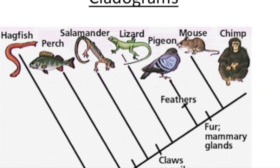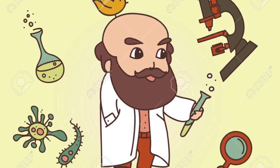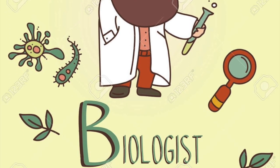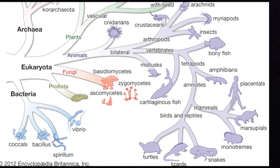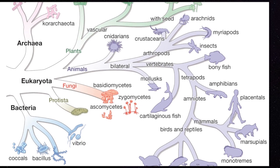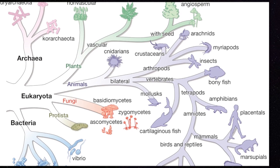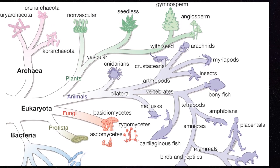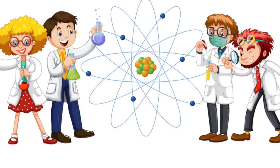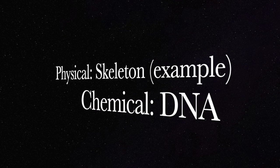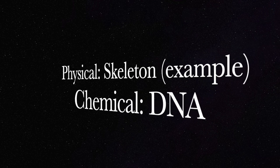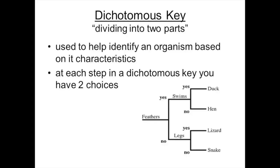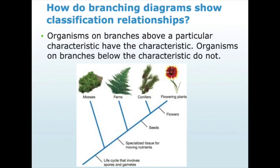Dichotomous keys and cladograms are all tools that biologists use to help organize all the different types of life forms on earth. These tools allow scientists to understand a species better and also understand the relationship it has to other species. Scientists typically examine the physical and chemical characteristics of a species to identify relationships among different living things. You will need to understand how to use dichotomous keys and cladograms so you can properly classify living things just like a biologist.